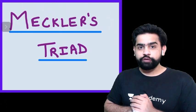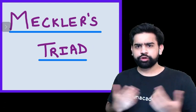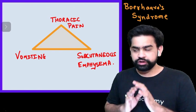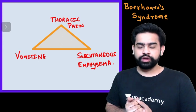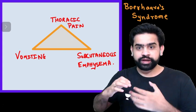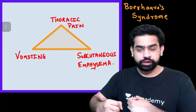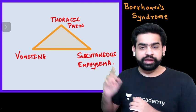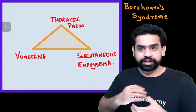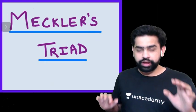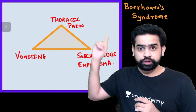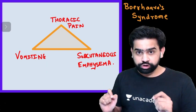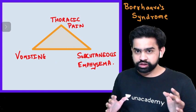Moving on to the third one: Mackler's Triad, seen in Boerhaave syndrome. Boerhaave syndrome is a spontaneous rupture of the esophagus — a through-and-through rupture where continuity of the esophagus is lost. Unlike Mallory-Weiss, which involves only a longitudinal mucosal tear, Boerhaave involves full rupture. Mackler's Triad consists of thoracic pain, vomiting, and subcutaneous emphysema.